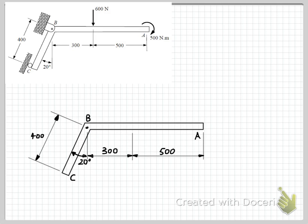So now that we have the body that we're analyzing, and the reference dimensions and angles, and labeled the important points, we can start adding in our loads. So let's work from right to left. The first one we have is our 500 Nm applied couple acting at end A, and then we have a 600 Nm force acting 300 mm from point B.